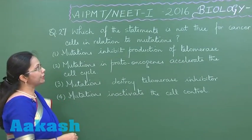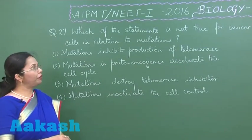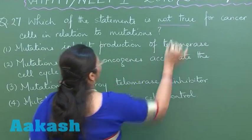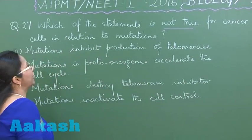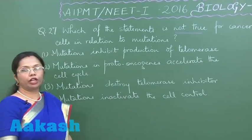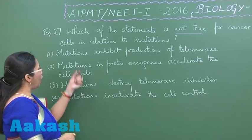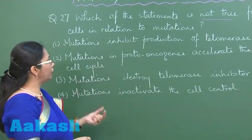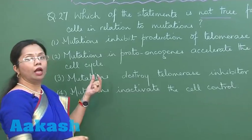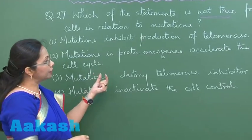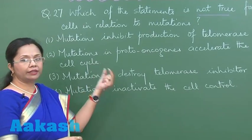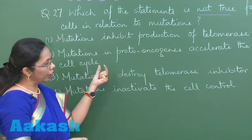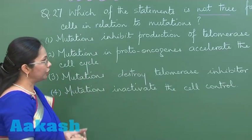In question 27, we have to find a statement which is not true for cancer cells in relation to mutations. Out of the four options given, these are regarding the various genes or enzymes which are employed in cell division.